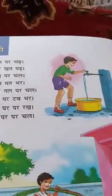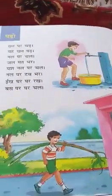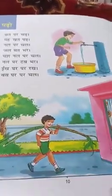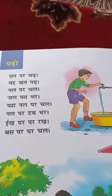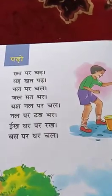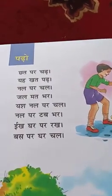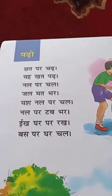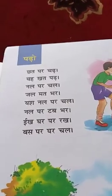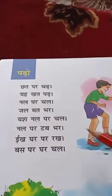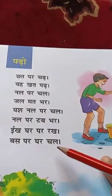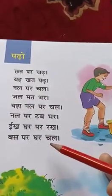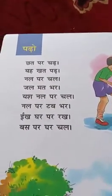Look at the pictures also. Dear children, read loudly a minimum of three to five times, and then write one time only. Say and write this poem from beginning to ending in your three-line notes. Next, come to page 11.